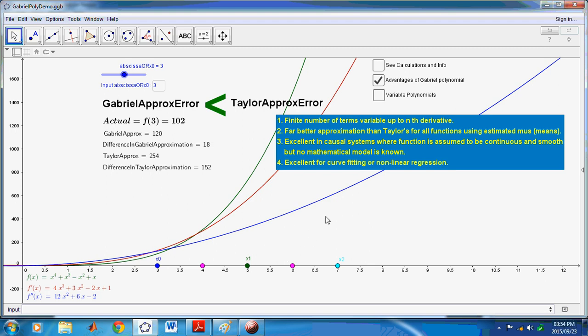There are other uses. For example, the Gabriel polynomial has been used in computer-aided design. It's also been used in computer graphics. It's been used in physics and engineering. So, it has a lot of uses.